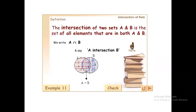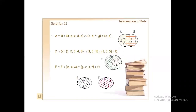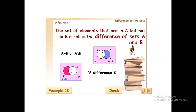Then we discussed the intersection of sets — what does intersection mean. The common elements between set A and B are called the intersection of sets. Then after intersection we solved some examples, and discussed the difference of two sets. The set of elements that are in A but not in B is called the difference of set A and B.